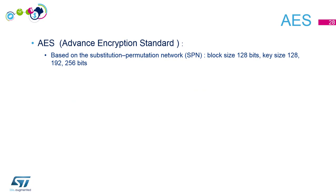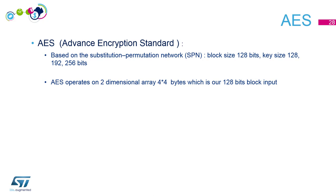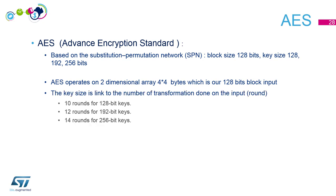Now we'll deal with AES — Advanced Encryption Standard — which is the main standard used today. It is based on the substitution-permutation network. The block size is 128 bits, and the key size can be 128, 192, or 256 bits. Internally, AES operates on a 2D array of 4×4 bytes, which explains the 128-bit block size. It performs rounds of transformation: 10 rounds for a 128-bit key, 12 rounds for 192-bit, and 14 rounds for 256-bit.